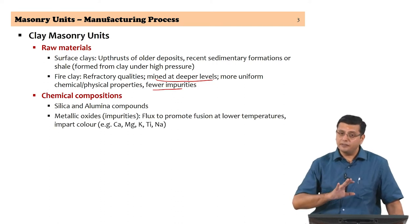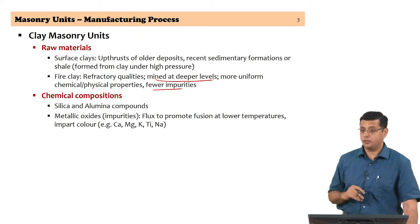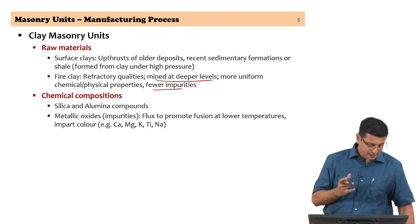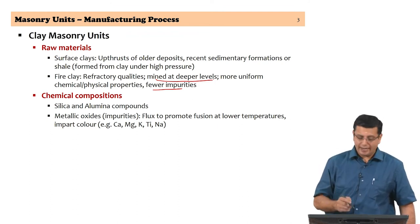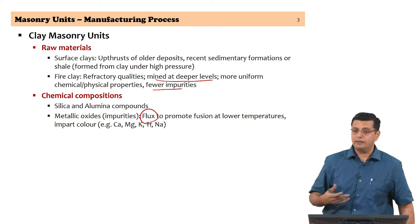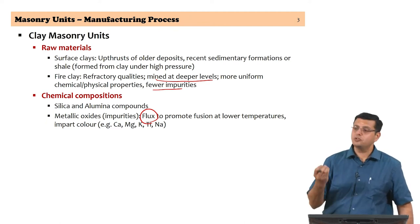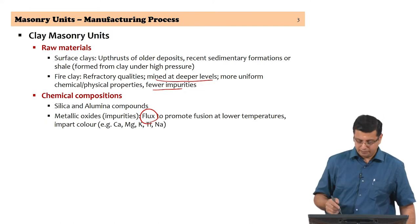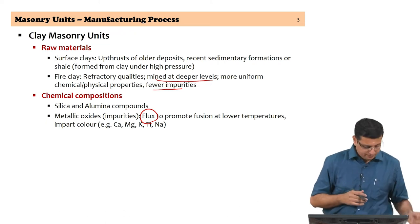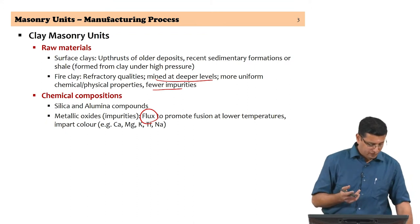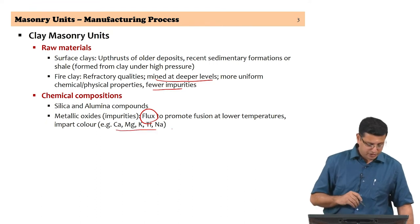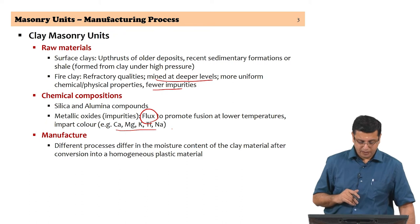There is also a significant distribution of different metallic oxides, which are seen as impurities. These impurities typically act as flux during the firing process. When the clay bricks are being fired, the presence of these metallic oxides helps create a stronger final product. Depending on the proportions of these impurities, the color of the brick can also vary. Typically we are talking of calcium, magnesium, and potassium in their oxide forms as the impurities.